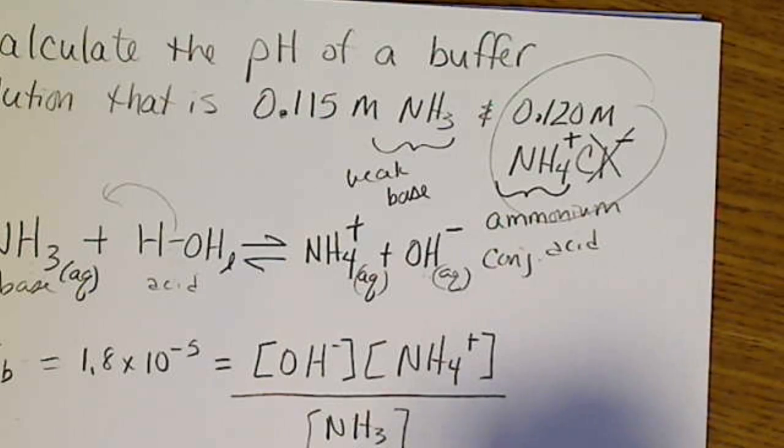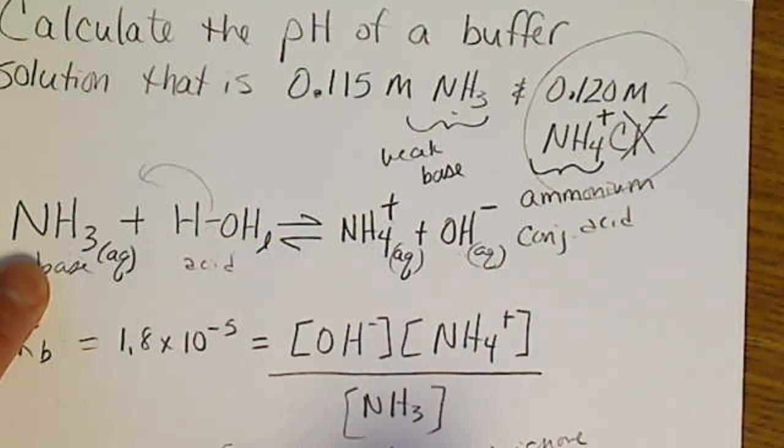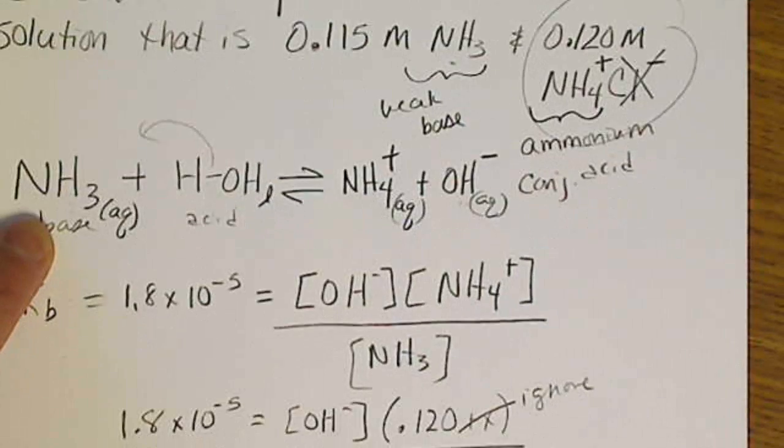So this right here is really 0.120 plus a small amount X, which I'm going to ignore because that's not very significant. And then the weak base, ammonia, its concentration was 0.115 minus X. Again, I'm going to ignore that small change.